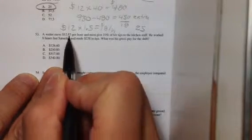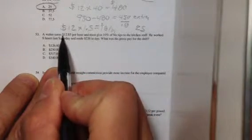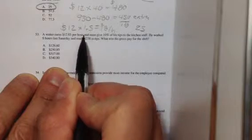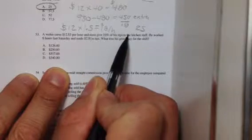Okay, problem 53 you have to read really carefully. It says a waiter earns $12.85 per hour and has to give 10% of his tips to the kitchen staff.